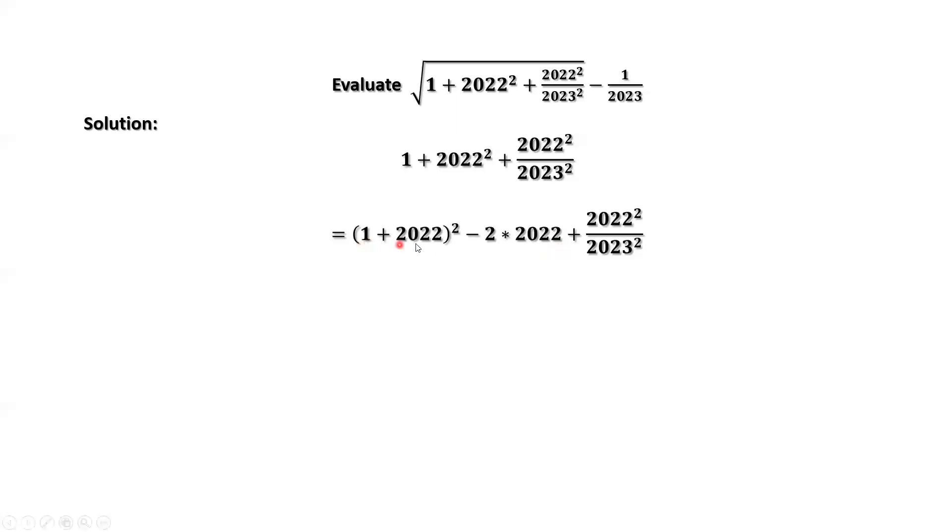1 plus 2022 equals 2023. The middle part, we have 2023, then divide by 2023. Cancel each other. It's the same as 2 times 2022.